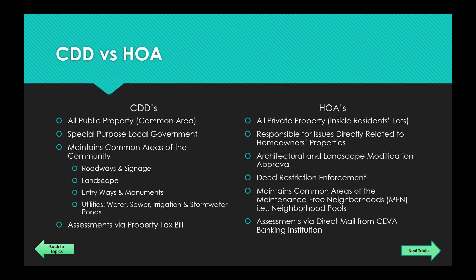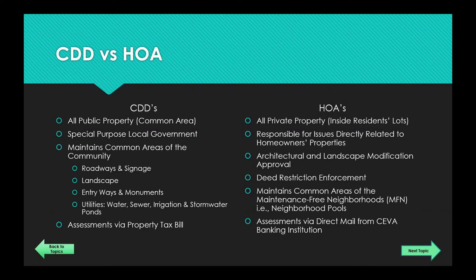The first item we wanted to do a comparison for is the districts versus the HOA. Community Development Districts Two and Five make up the same jurisdictional boundaries as the Country Club Edgewater Village Association HOA. The districts have a different purpose than the HOA. The districts govern the public property and common areas — they are a special purpose local government managed out of Town Hall — and they manage the infrastructure: roadway signage, landscaping, entryways, monuments, and all utilities including irrigation, stormwater, water and sewer.